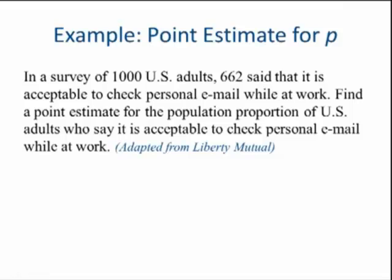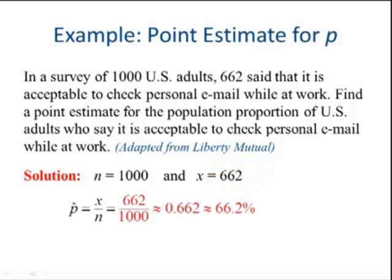Let's look at an example. In a survey of 1,000 U.S. adults, 662 said it is acceptable to check personal email while at work. Find the point estimate for the population proportion of U.S. adults who say it is acceptable to check personal email while at work. In this case, n is 1,000, x is 662. So p hat is 662 divided by 1,000, which is 0.662 or approximately 66.2%.